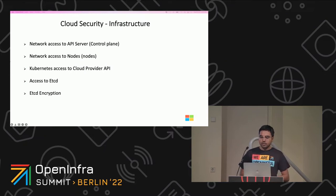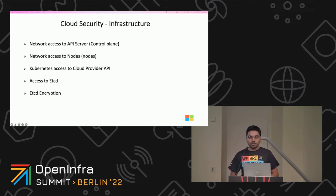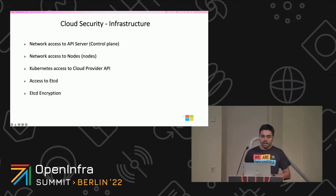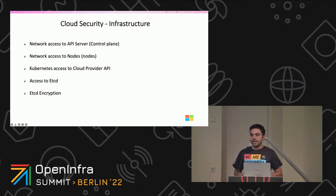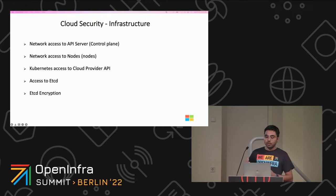These are some important things to consider in your infrastructure cloud security. All access to the Kubernetes control plane should not be allowed publicly on the internet and should be controlled by network access control lists. Nodes should be configured only to accept connections from the control plane on specific ports, and if possible, nodes should not be accessible on the public internet. It is always best to provide the cluster with cloud provider access that follows the principle of least privilege. As for etcd, it is the data store of Kubernetes and stores the entire state of your cluster, so it's really important to limit access to etcd — it should be accessible only on the control plane and over TLS. Another best practice is to encrypt etcd at rest as well.